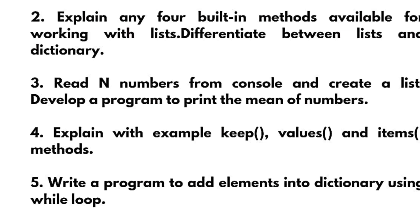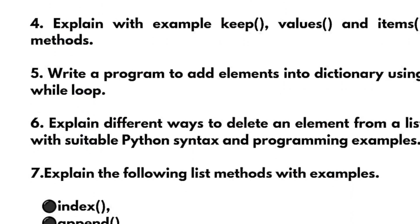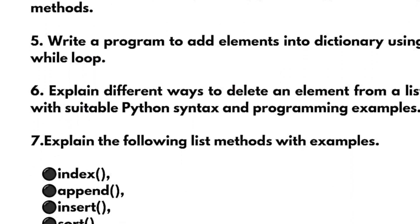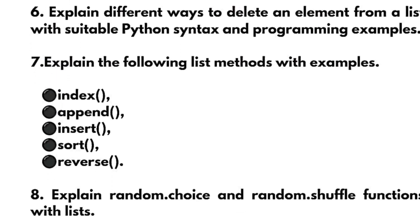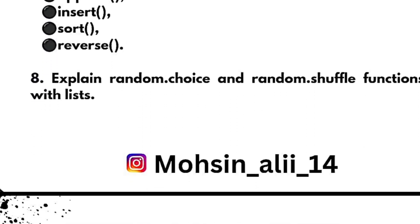Explain with example the keys, values, and items methods. Write a program to add elements into a dictionary using a while loop. Explain different ways to delete an element from a list with suitable Python syntax and programming examples. Explain the following list methods with example: index, append, insert, sort, reverse. The last question from Module 2 is explain random choice and random shuffle functions with lists.